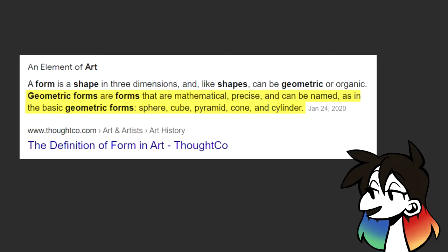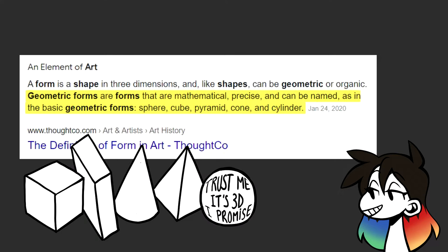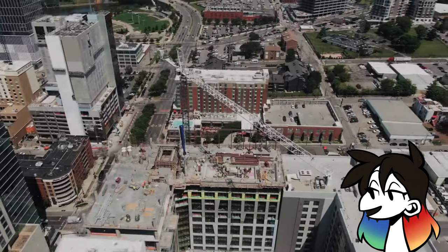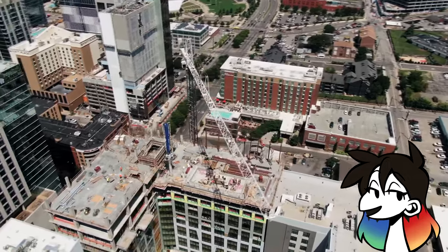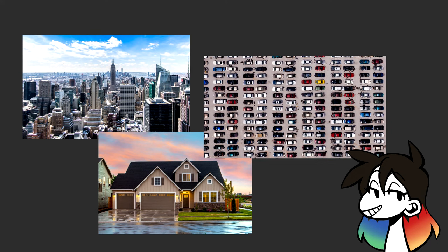Geometric forms are forms that are mathematical, precise, and can be named. These include our basic and well-known geometric forms that we learn in math: cubes, rectangular prisms, cones, pyramids, spheres, cylinders, and more are all considered geometric forms. Just like geometric shapes, geometric forms achieve the same thing. Illustrating and building man-made objects are always done with geometric forms, because they're easier to calculate and repeat. Skyscrapers, houses, and cars, just to name a few, are all considered geometric — all built with geometric forms.